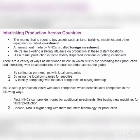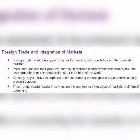There are a variety of ways in which MNCs spread their productions and interact with local producers in various countries across the globe: by setting up partnerships with local companies, by using local companies as suppliers, and by closely competing with local companies or buying them up. MNCs that set up production jointly with local companies provide money for additional investments, like buying new machines for faster production.